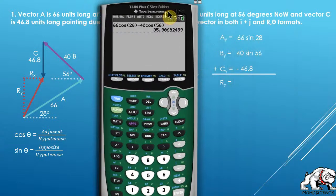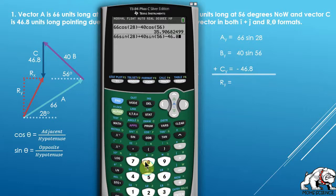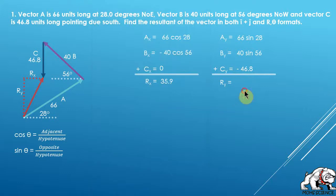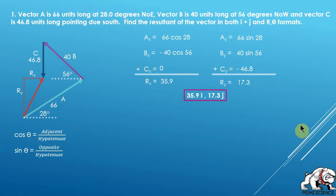In the y direction: 66 × sin(28) plus 40 × sin(56) minus 46.8 gives us Ry = 17.3. One note: whatever trig function you use for the x direction, you'll use the other one for y — cosine for x means sine for y, and vice versa. You'll never use tangent here because tangent doesn't involve the hypotenuse.